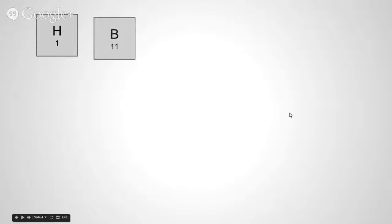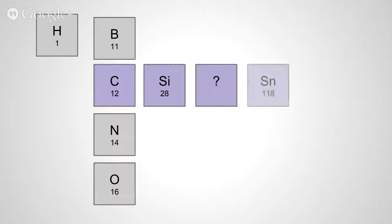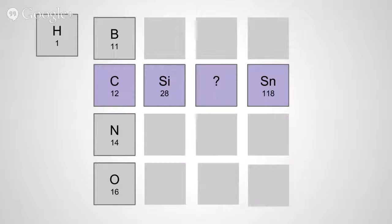Mendeleev first looked at the physical mass of the atoms by weighing each atom based on the lightest one, hydrogen. He created a long line of elements from smallest to largest. Next, Mendeleev looked at the chemical properties of the atoms to organize them by families of elements that reacted similarly. By doing this, he eventually came up with a table that looks like this one.